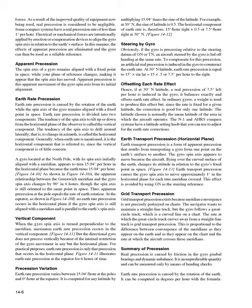Electrical or mechanical forces are intentionally applied by erection or compensation devices to align the gyro spin axis in relation to the earth's surface. In this manner, the effects of apparent precession are eliminated and the gyro can then be used as a reliable reference. Apparent precession is this apparent movement of the gyro spin axis from its initial alignment — the spin axis remains aligned with a fixed point in space while your plane of reference changes, making it appear that the spin axis has moved.